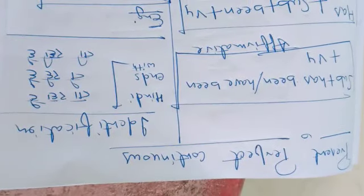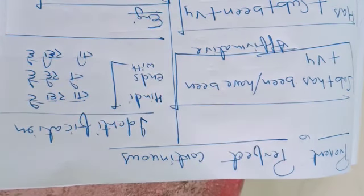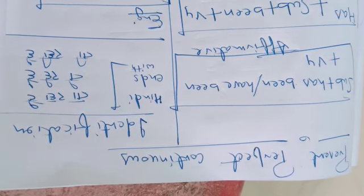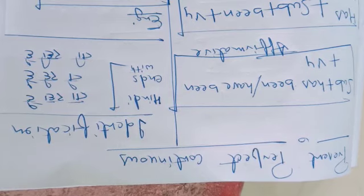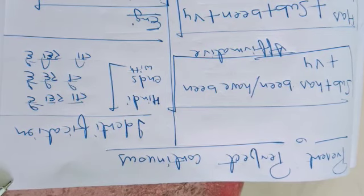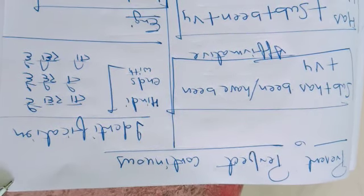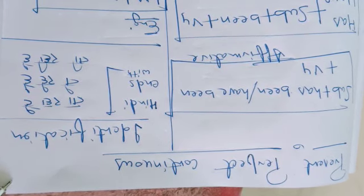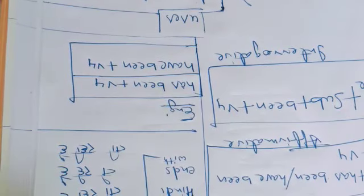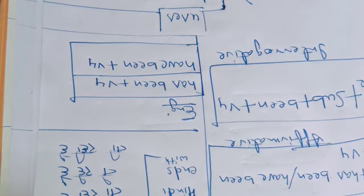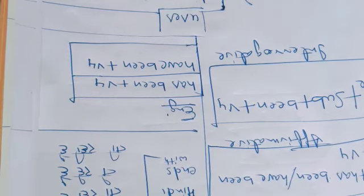Now moving on to present perfect continuous tense. For identification — pahachaan kya hai — in Hindi, as I have already explained, we identify tense from the last word. This tense will end in Hindi with 'ta raha hai,' 'te rahe hai,' for example 'mein khailta raha hoon,' 'woh khailti rahi hai,' 'mein jata raha hoon.' In English, the identification is: has been / have been plus V4.